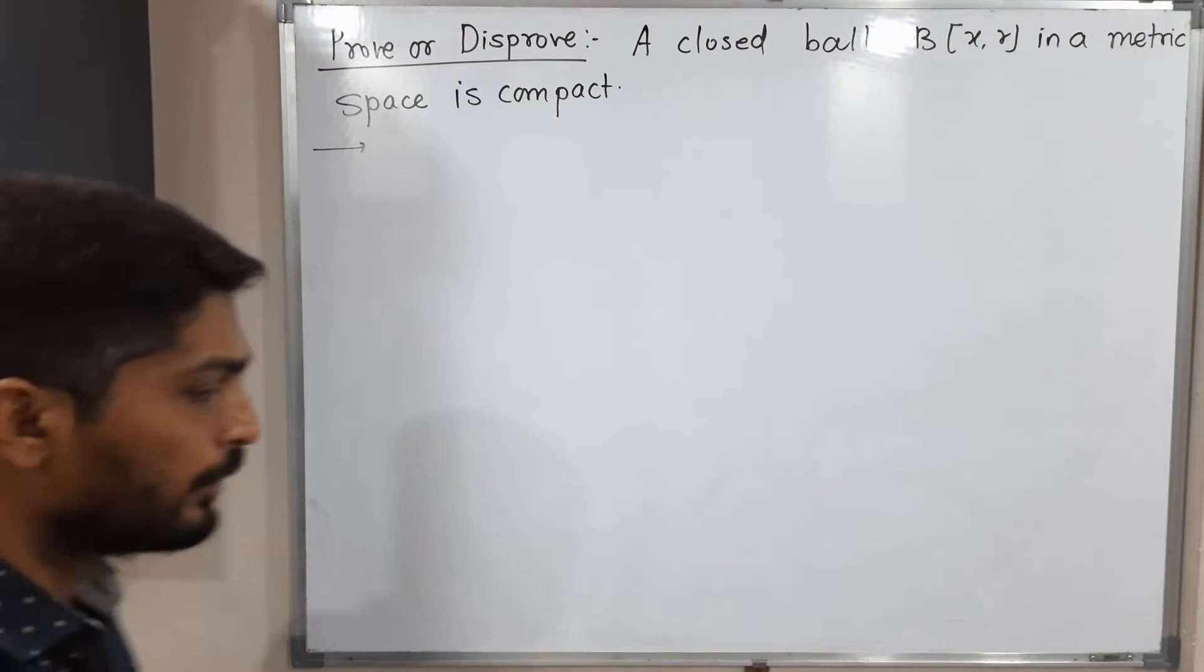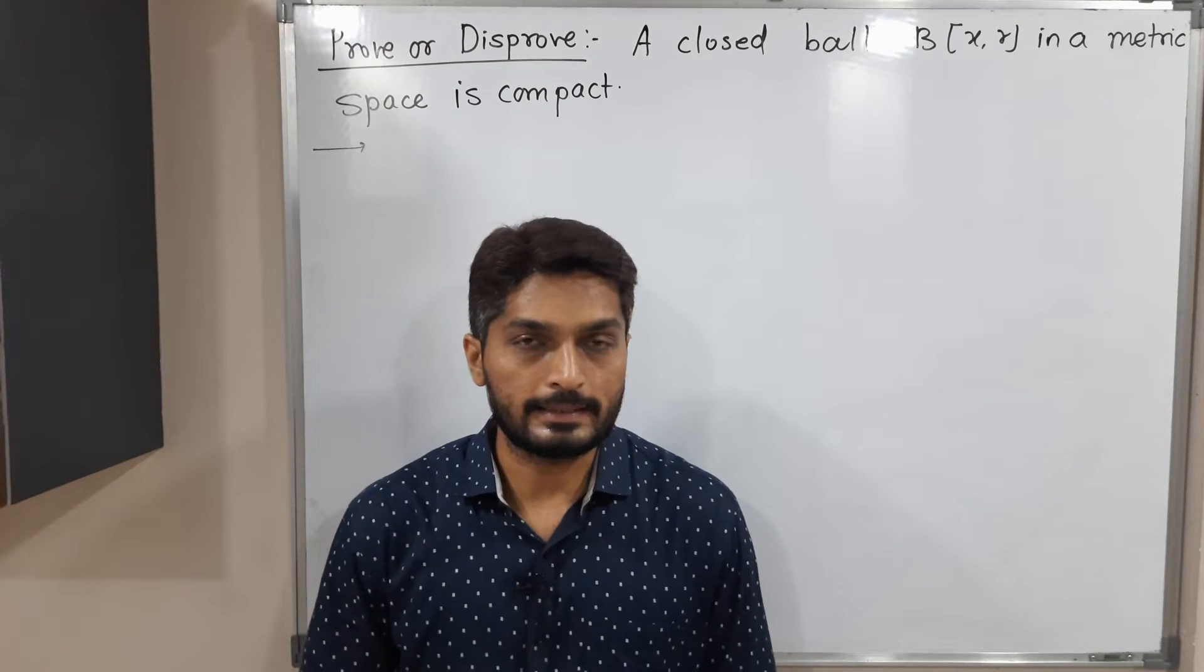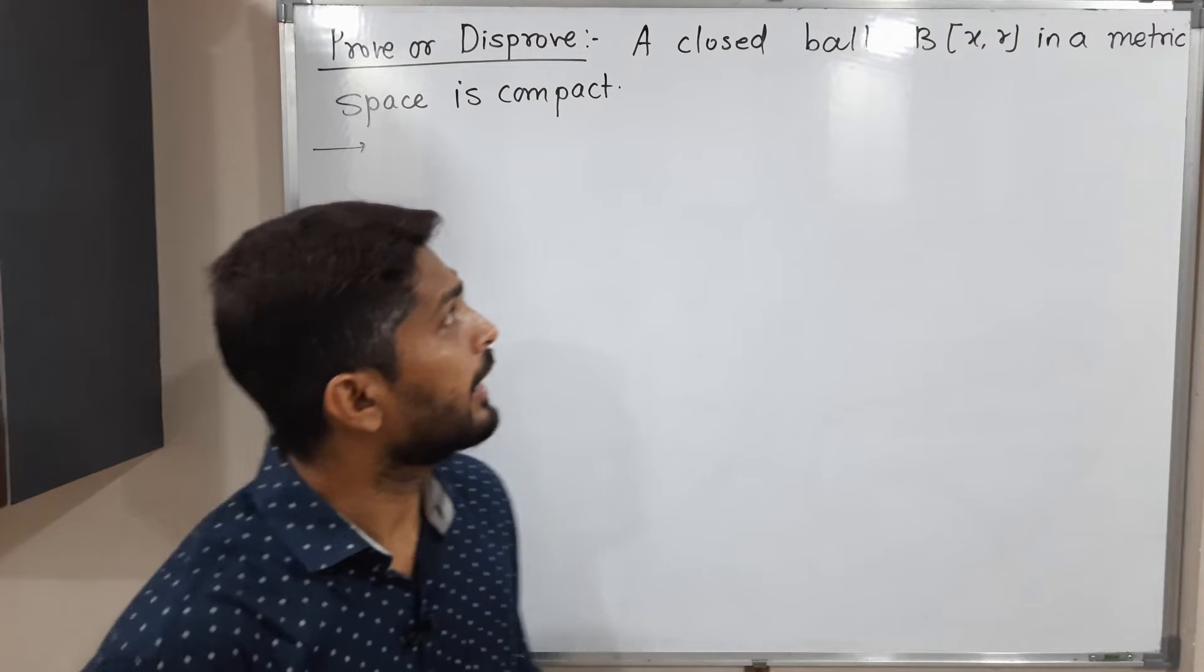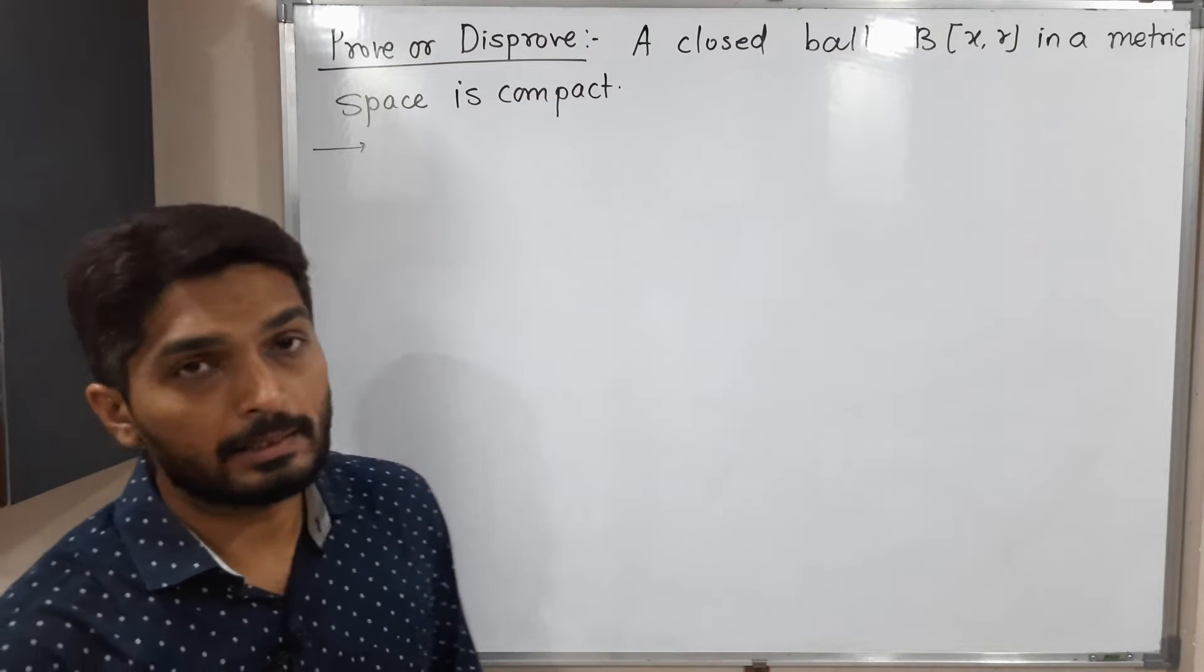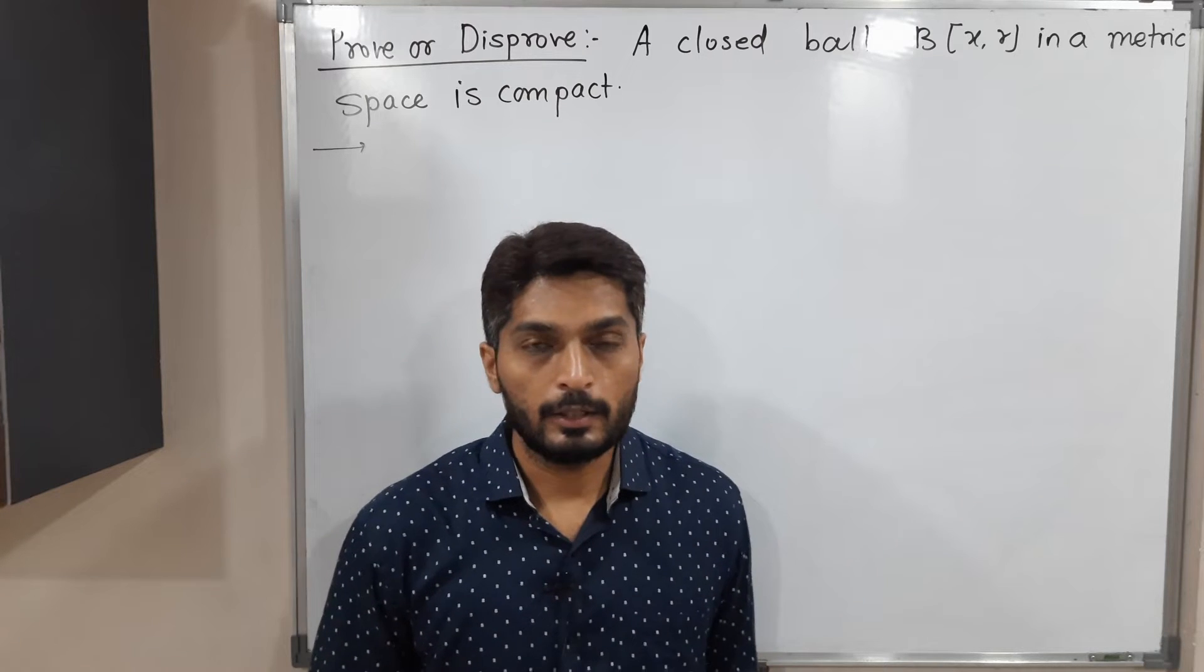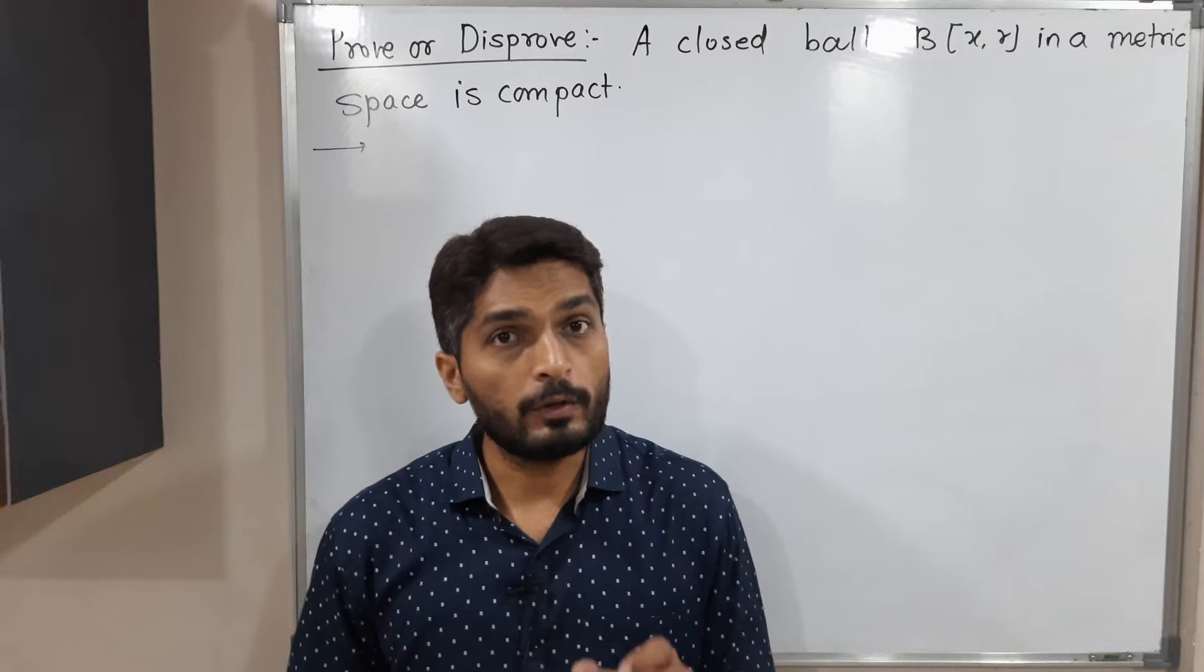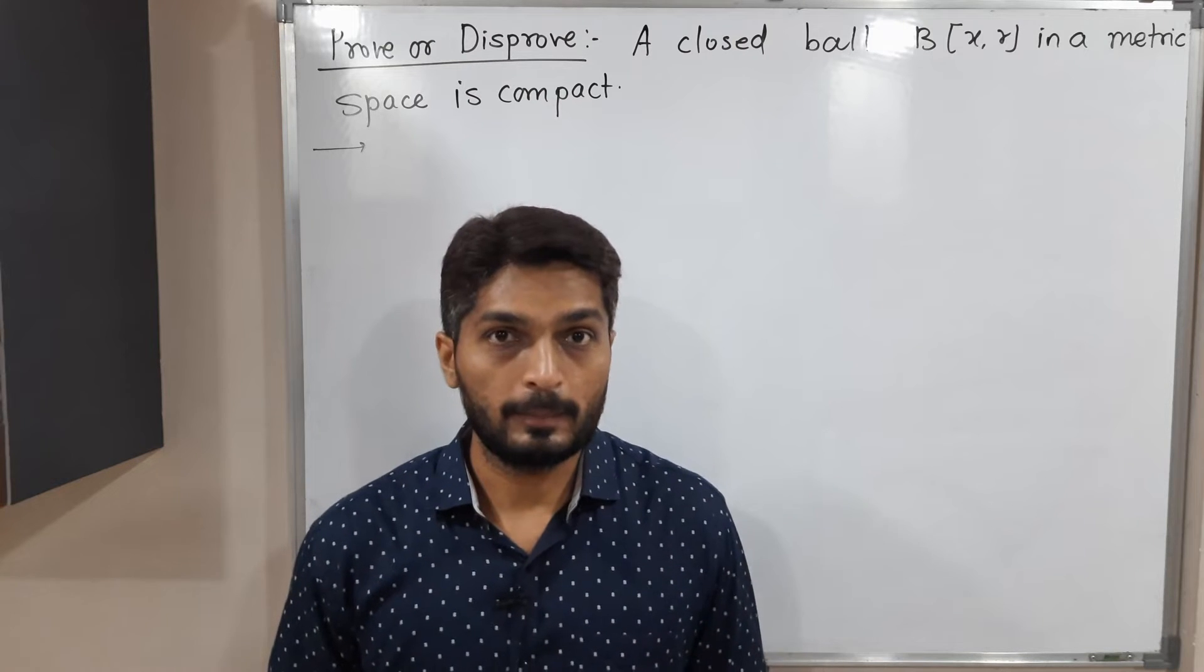Hi everyone, in this video we are going to discuss this example. The question is: prove or disprove that every closed ball B(X,R) in a metric space is compact. So actually this statement is not true, and we are going to prove this by giving a counterexample.